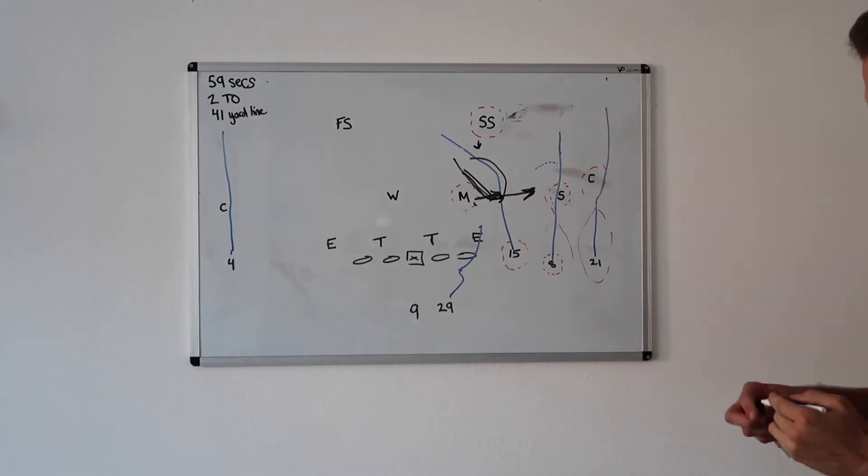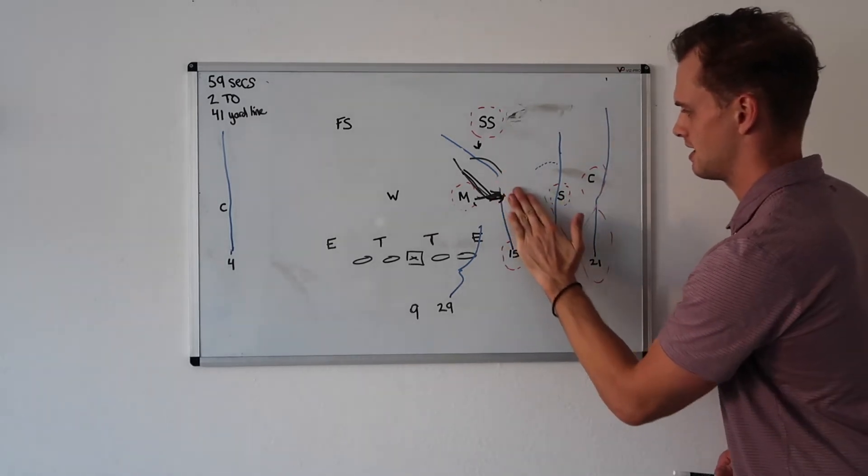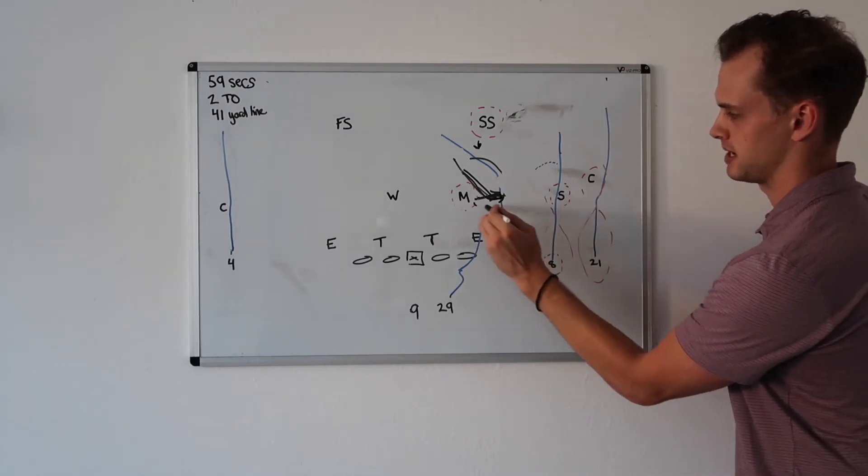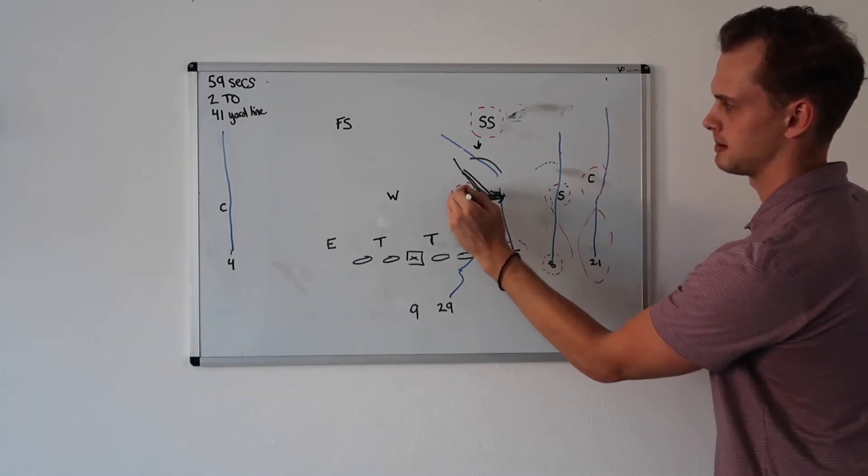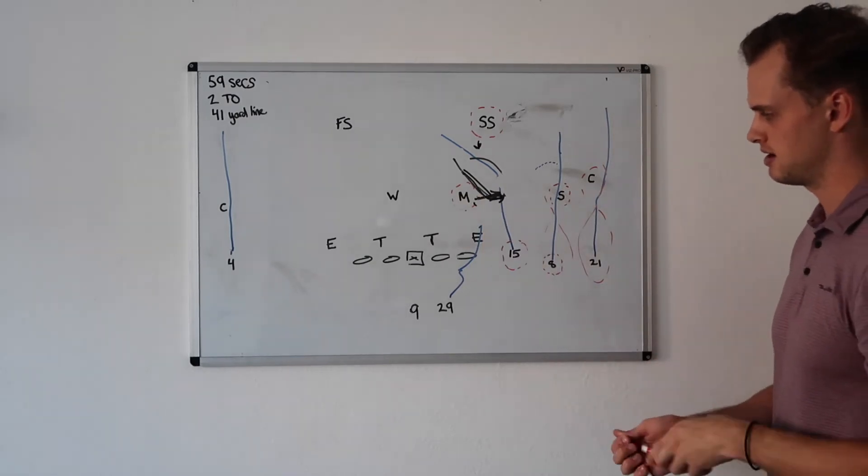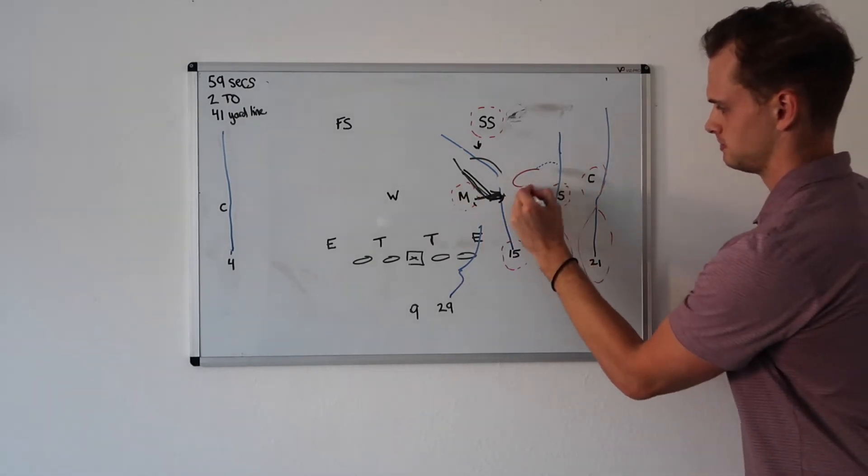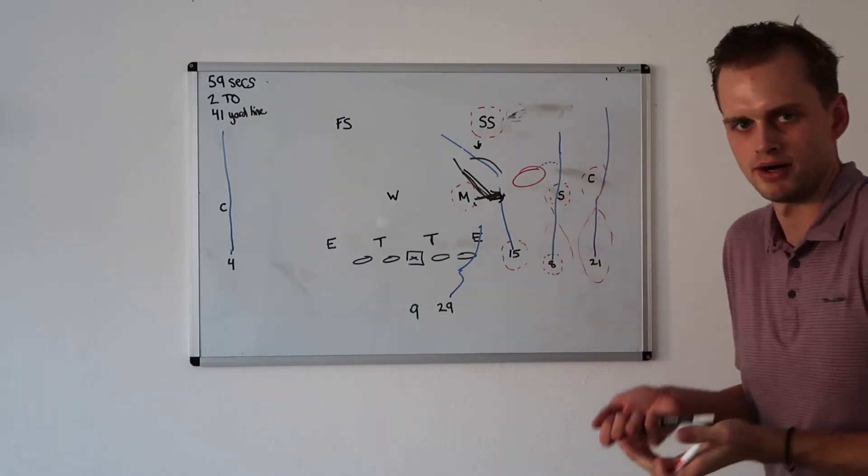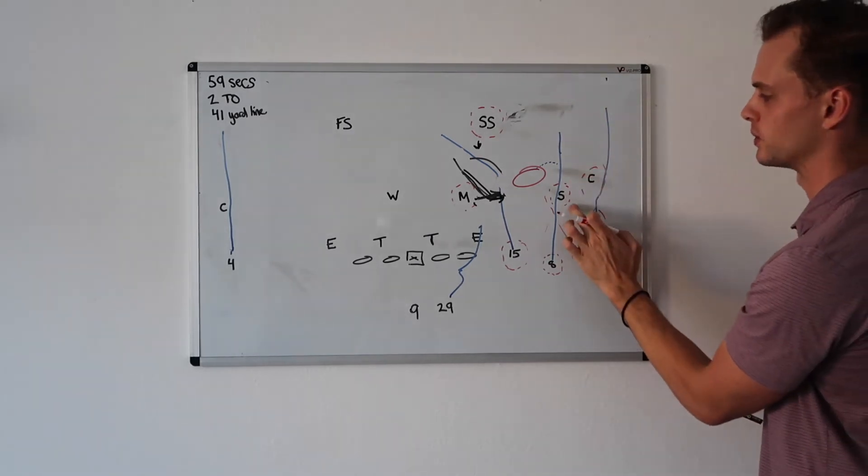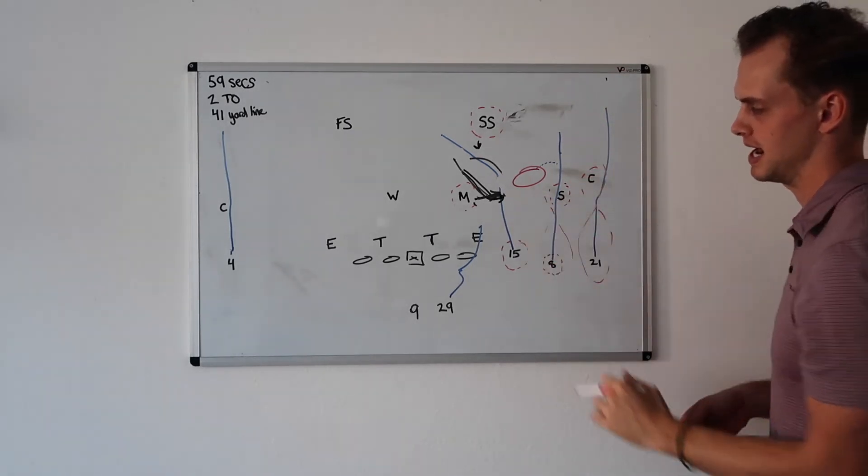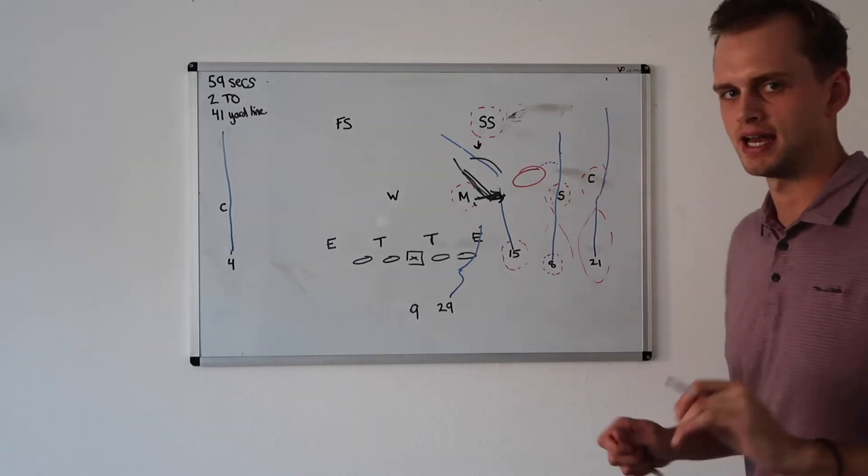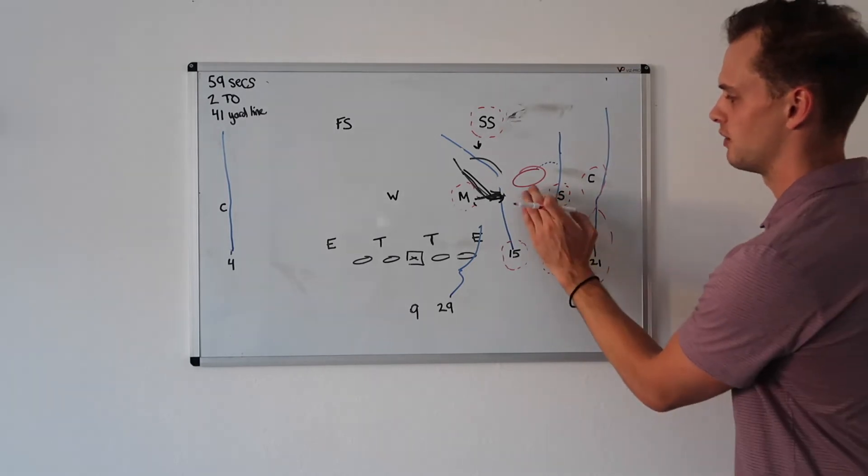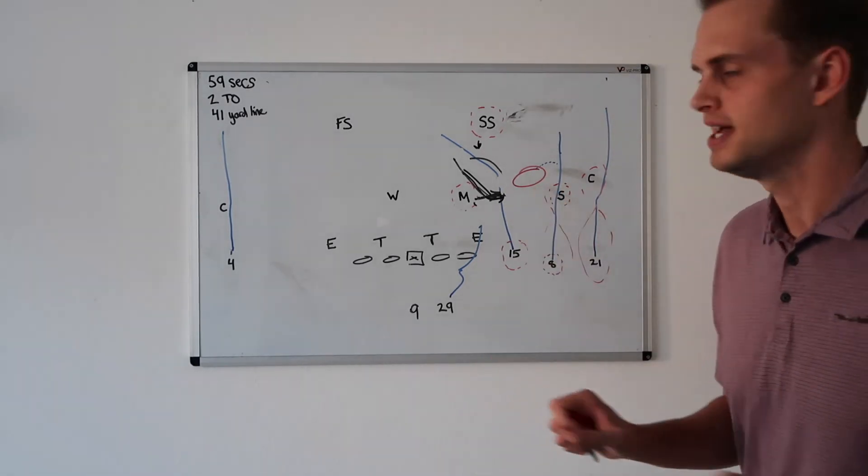Because of the outside leverage and because Drake London swallows up the Mike and the safety, this window right here is the winning window for Amon Ra to just break off his route and sit in that pocket. This is a vertical route that he's reading leverage and sitting in this pocket. It's a great scheme, once again, tapping into that four vertical mindset and Amon Ra, your best offensive player, finding a window there. But it takes a unit, takes an execution.